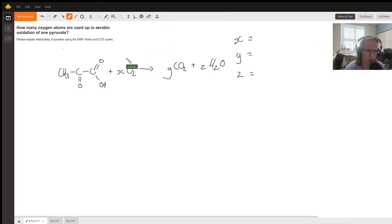Okay, here we have a relatively simple question asking how many oxygen atoms are used up in the aerobic oxidation of one molecule of pyruvate. Here I've drawn for us a pyruvate molecule and what we want to figure out is how many oxygen atoms are being used up, so x.